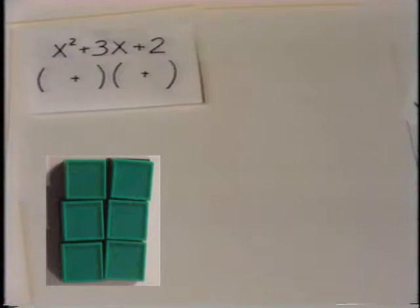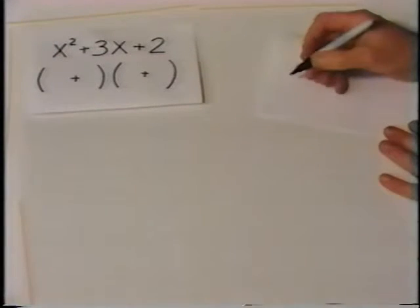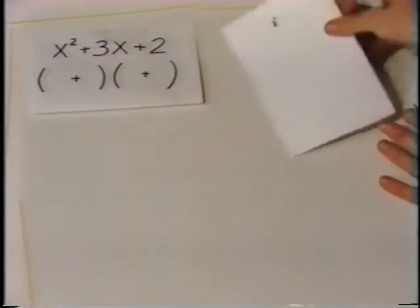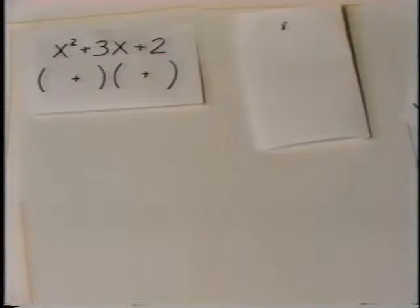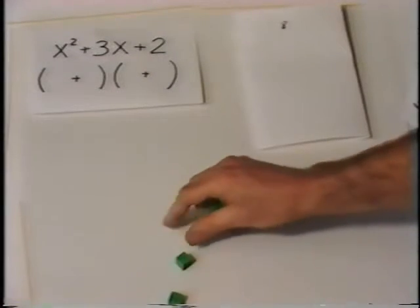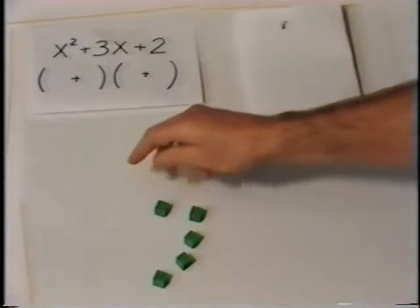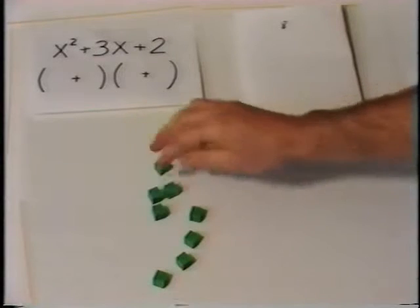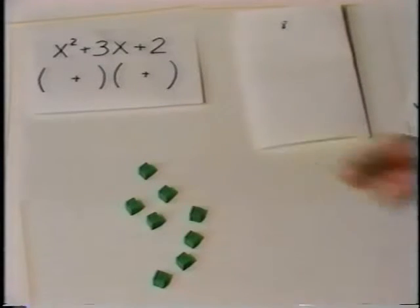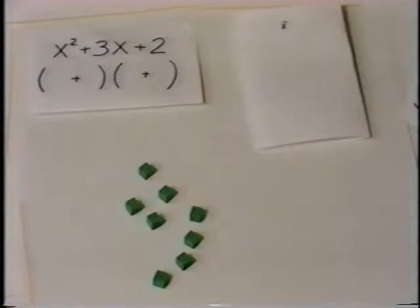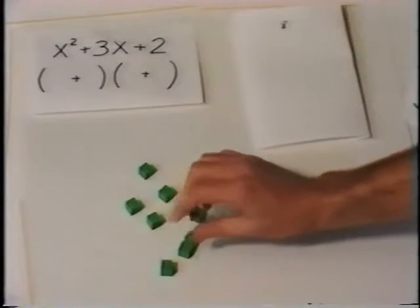Let's look at another amount — let's look at 8. We'll write the amount down and count it out: 1, 2, 3, 4, 5, 6, 7, 8. Let's factor 8. What is factoring? Factoring is building a rectangle. First of all, let's see if we can build a rectangle that is 1 wide. Yes, we can build a rectangle that is 1 wide.